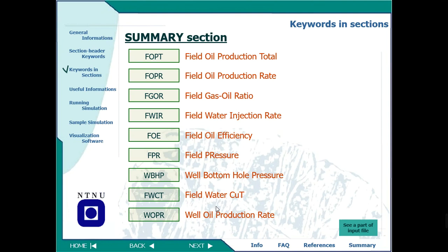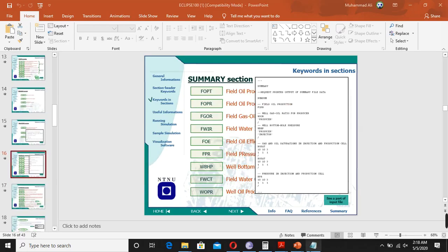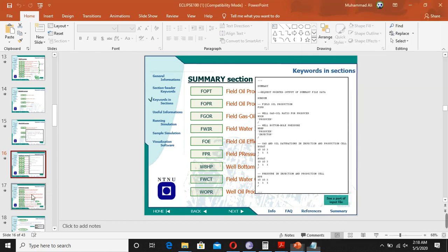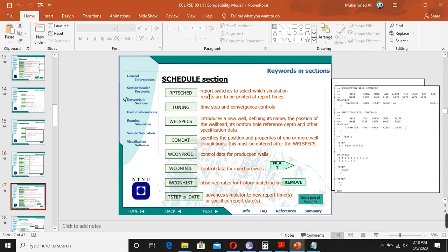Looking at the summary section in our data file, we have: FGPR (field gas production rate), field oil production rate, field water production rate, field water cut, and field gas-oil ratio. These are the outputs defined for this simulation. I will teach you how to find out what each keyword means in the next lecture.